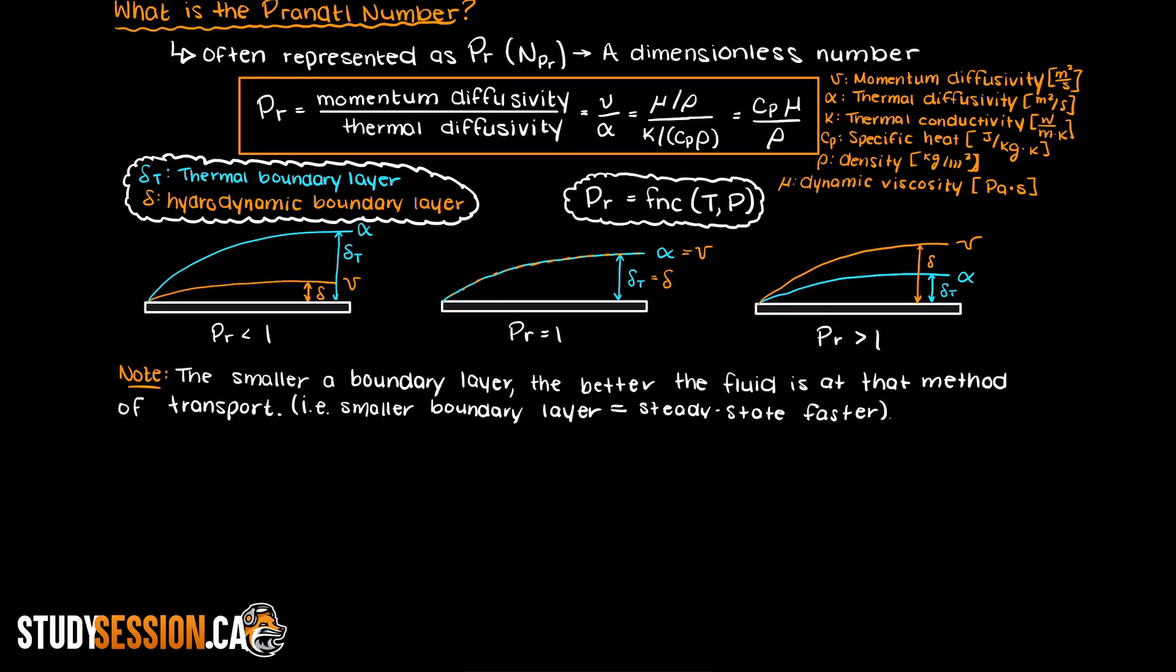We can represent this mathematically as the thermal diffusivity, which is simply the thermal conductivity of the fluid over its specific heat capacity times its density. And as you can see here, the density terms cancel out when divided by the mass diffusivity.